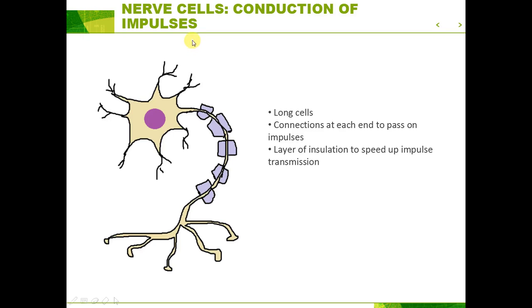Next up is the nerve cells, which specialize in the conduction and transmission of impulses within the body. They are pretty long cells and have connections at the top and bottom which allow them to be connected to other neurons or nerve cells for the impulse to run throughout the body. Also, some have a layer of insulation which helps to speed up the transmission of impulses.